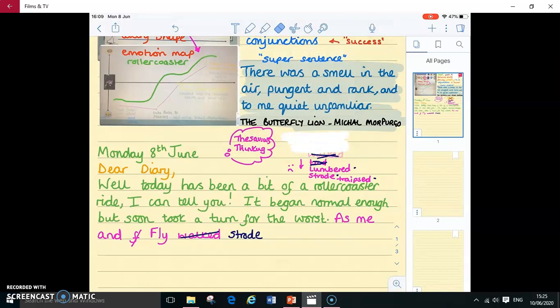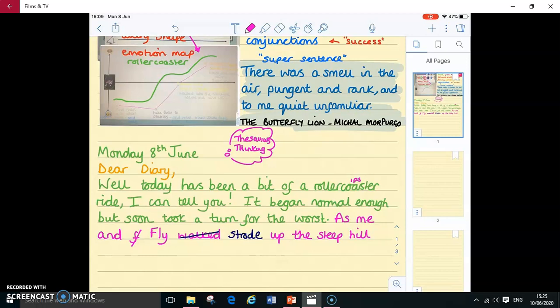So my thesaurus thinking has helped me turn the word walked or the verb walked into a better verb, makes my writing stronger. So as me and fly strode, and I've already said they've got to go up a really steep hill. So I'm going to add that in. I'm not just going to say hill. I'm going to add in more depth. I'm going to add in more detail. As me and fly strode up the steep hill, and I'm going towards the sheep field. So we're going to get that in. Something happens. I'm going to use my super sentence scaffold here. There's going to be a smell wafting towards me on the wind. So there was a smell in the air or on the wind, you could say.